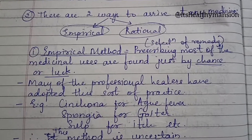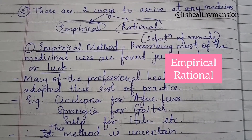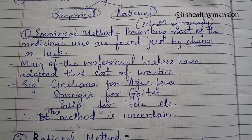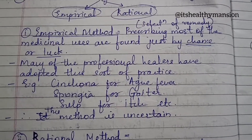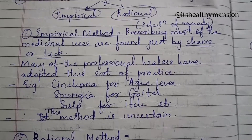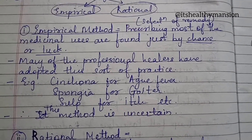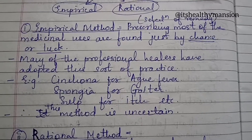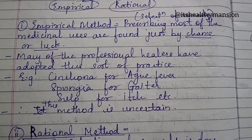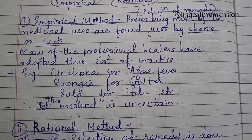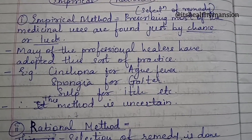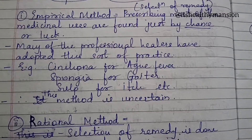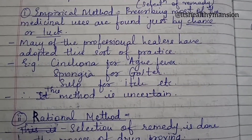There are two ways to arrive at any medicine: empirical and rational. The first is the empirical method, i.e. selection of remedy. Prescribing most of the medicinal uses are found just by chance or luck. Many professional healers have adopted this sort of practice, e.g. cinchona for fever, spongia for goiter, sulfur for itch, etc. This method is uncertain.